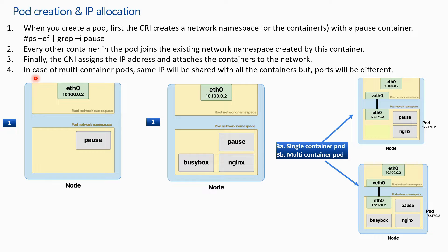As we have already discussed, in the case of multi-container pods the same IP is shared with all the containers — only the port number will be different. So no matter how many containers you have inside your pod, only one eth0 interface will be created per pod and its corresponding veth0 will be created on the node side. That is how IP addresses are allocated and ethernet interfaces are created by the CNI.